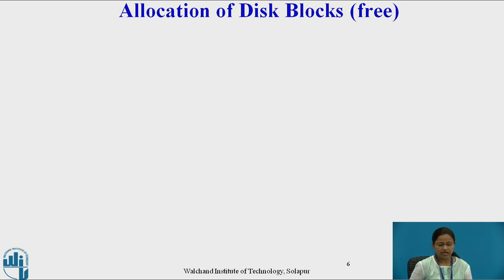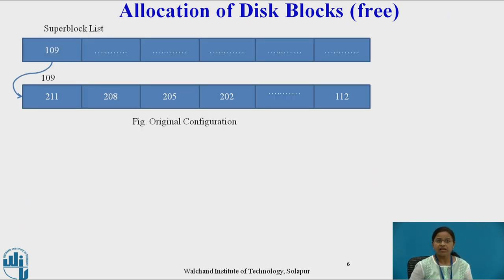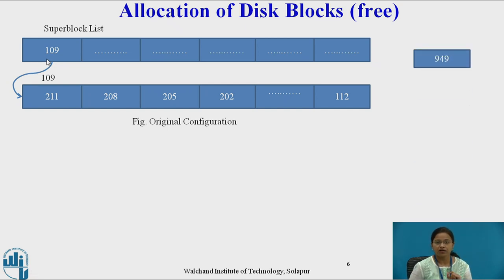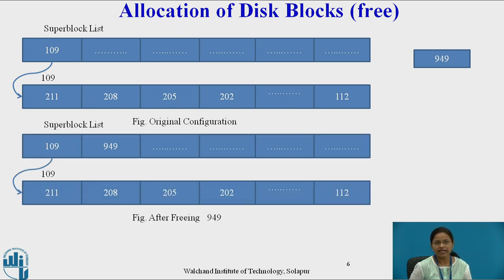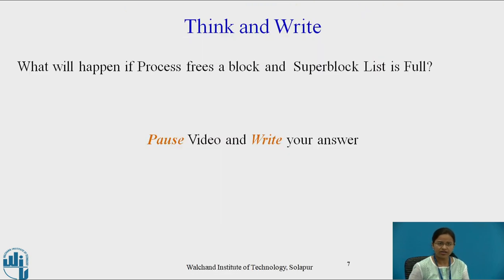As disk blocks are allocated, blocks can also be freed. Consider that this is the original configuration of the super block list. In the first list, there is only one free disk block present and the rest is free space. Suppose a process frees block number 949 — then block 949 is easily placed into the super block because it contains free space. Now, consider what will happen if a process frees a block and the super block list is full.